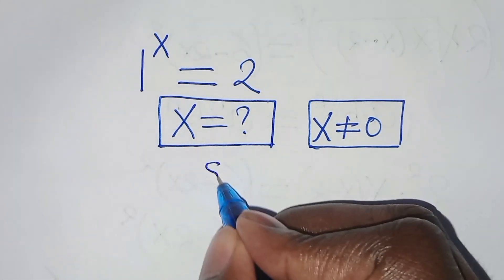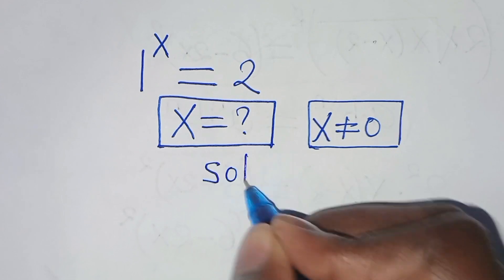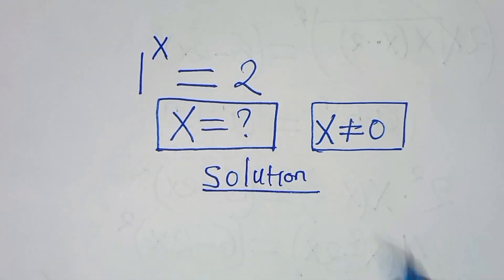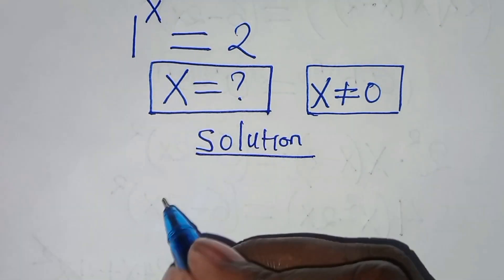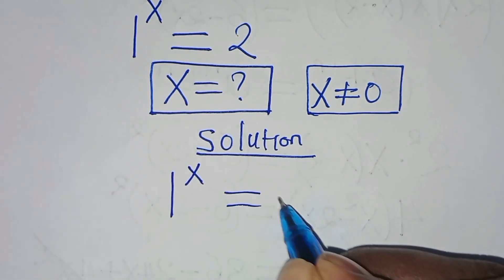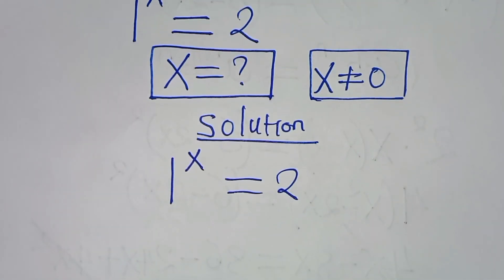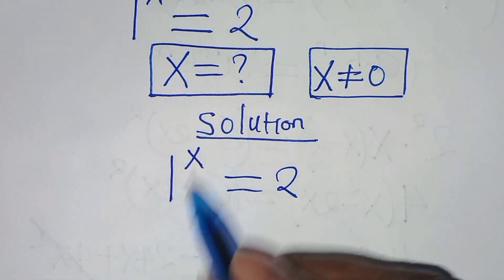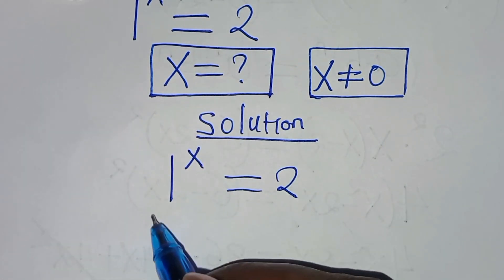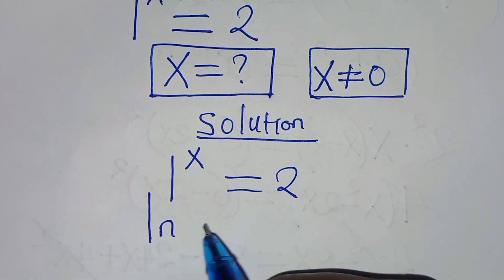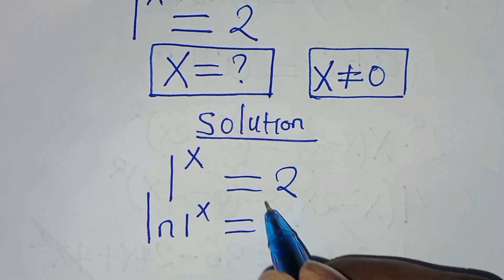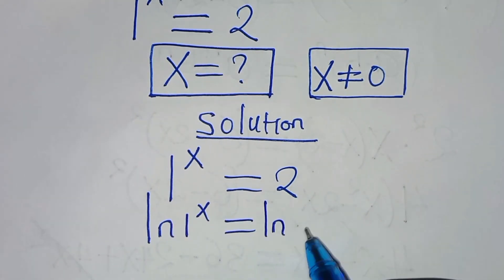Let's present the solution from here. The problem is 1 to the power of x, this is equal to 2. To solve for x here, we introduce the natural logarithm on both sides, so that we have the ln of 1 to the power of x, this is equal to the natural log of 2.